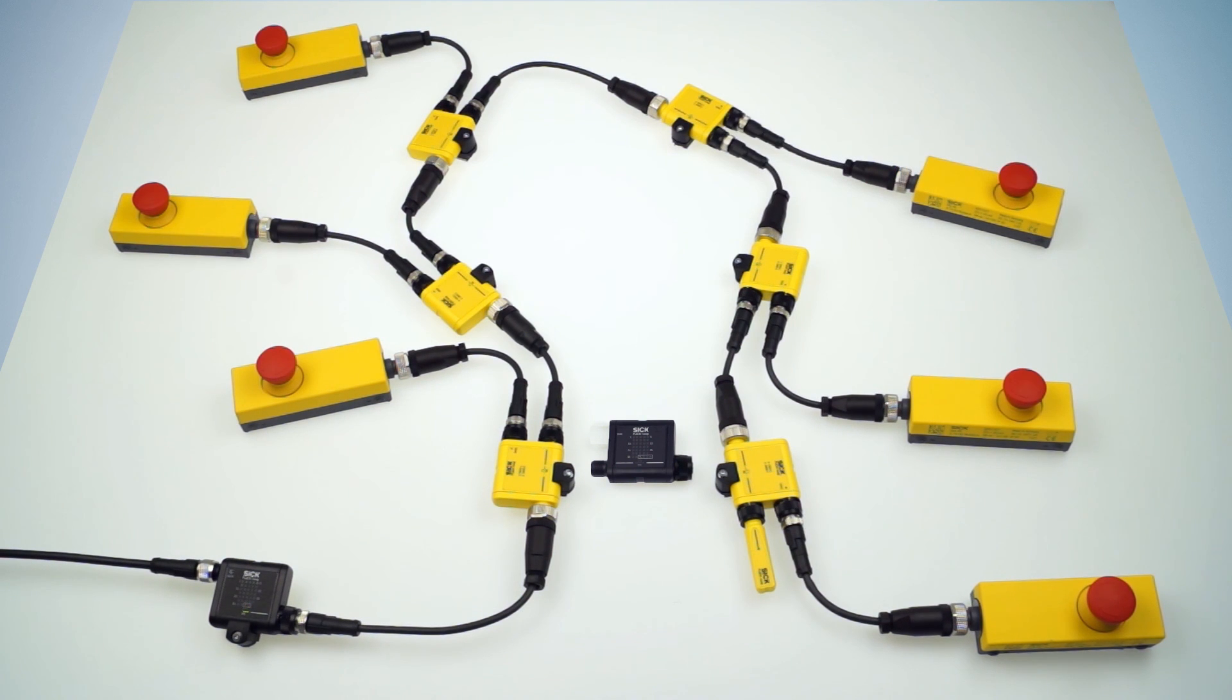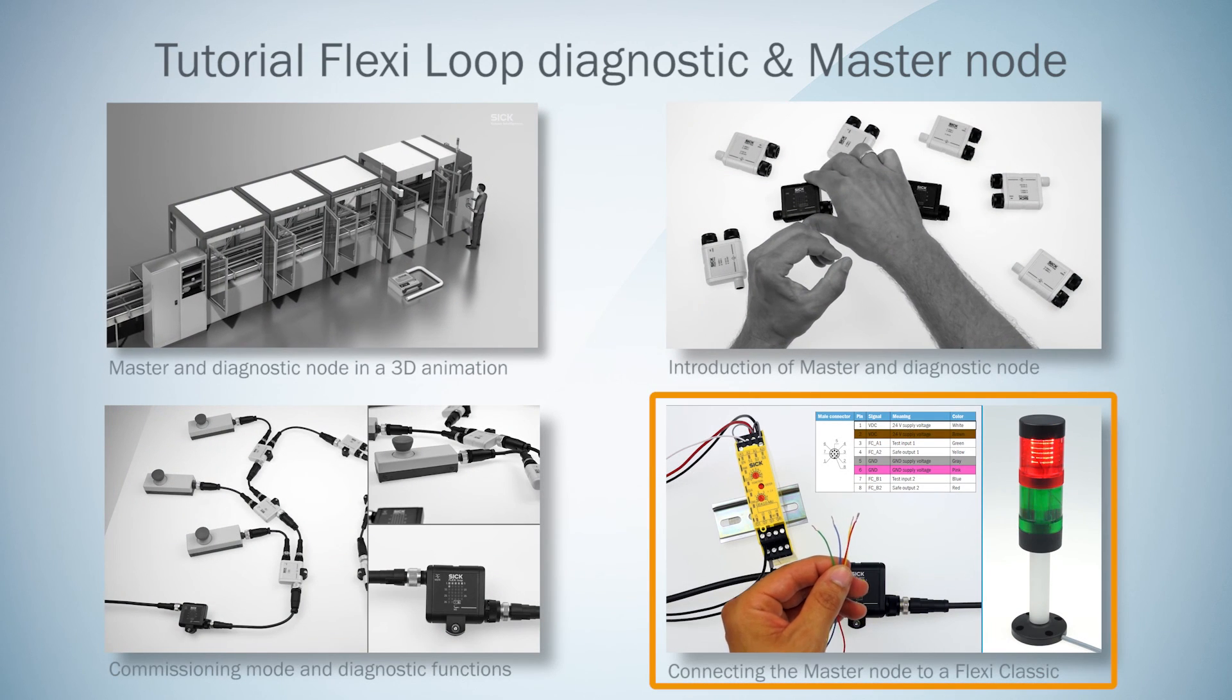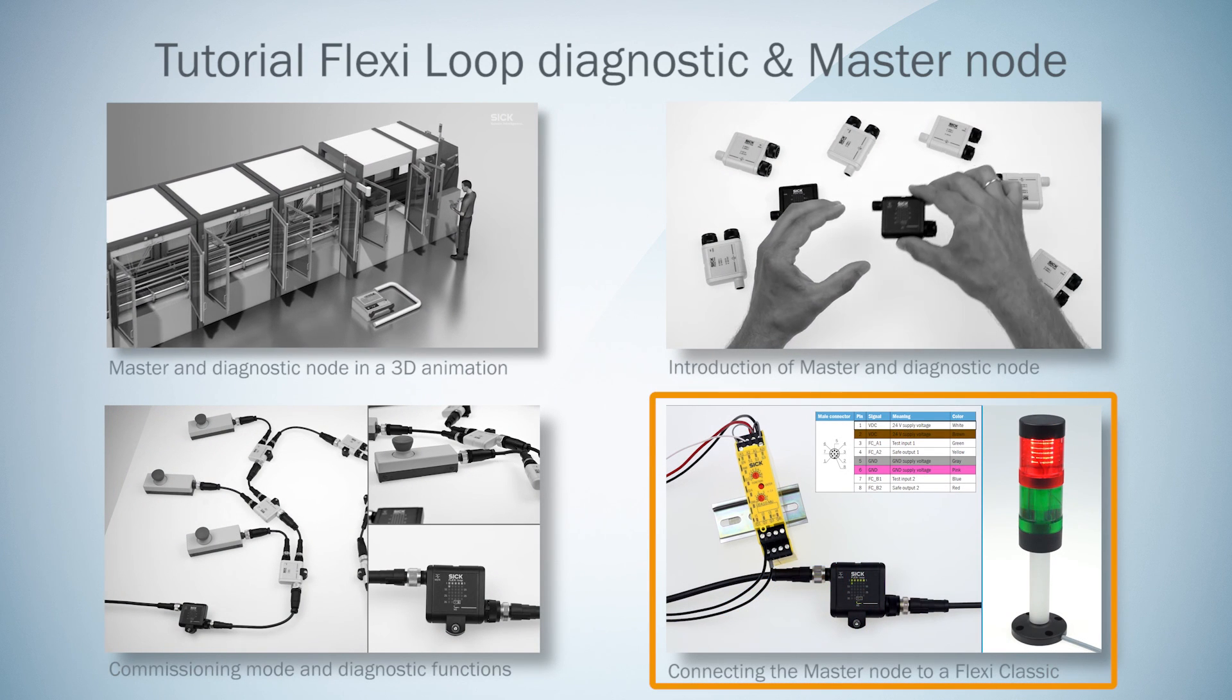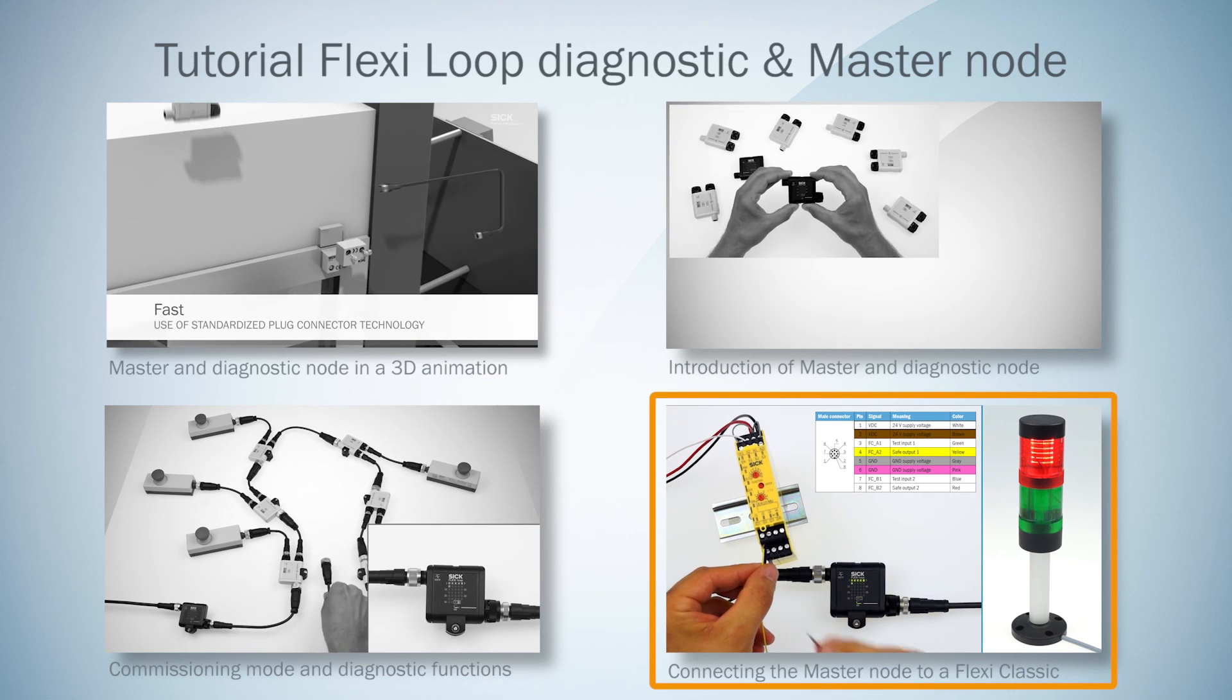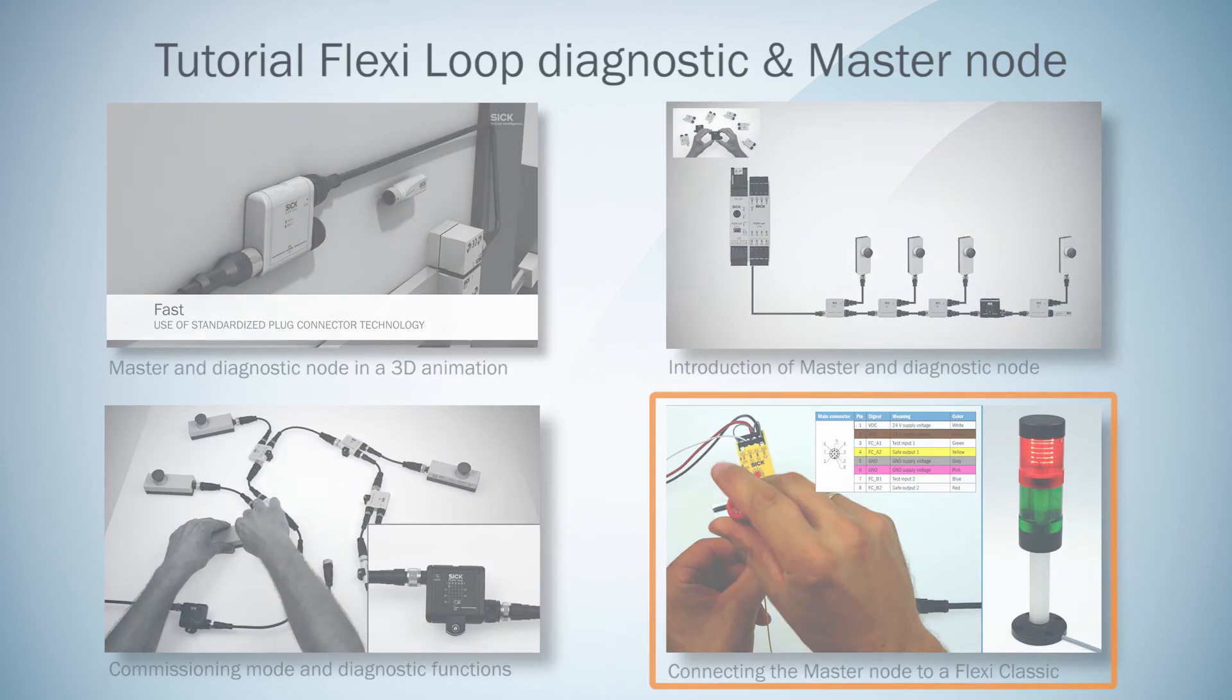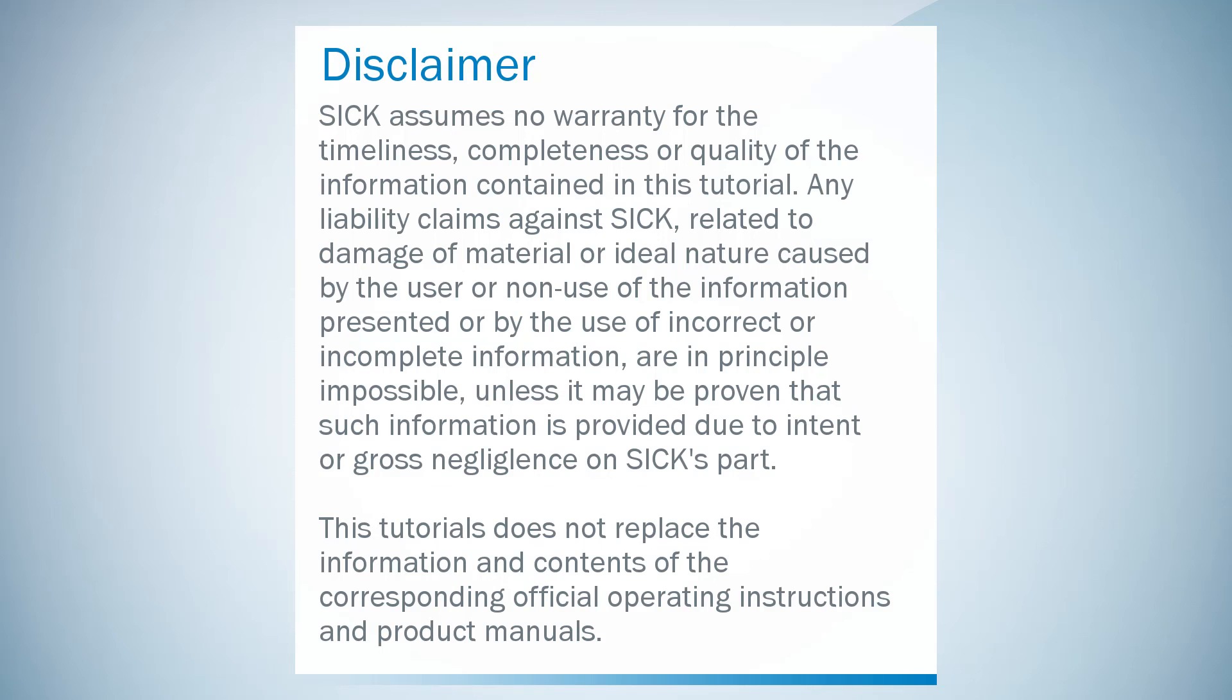That's been it with the explanation of the commissioning mode. In the next and final video of this tutorial series, you'll learn how to connect the Masternode to a FlexiClassic, along with the teach-in process of the FlexiLoop configuration. Thank you very much.